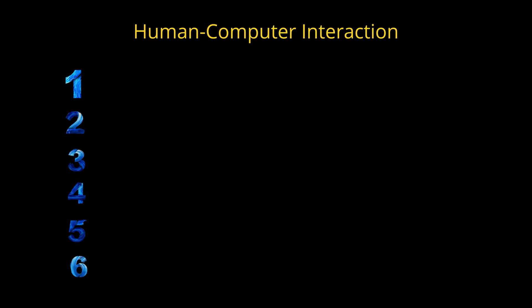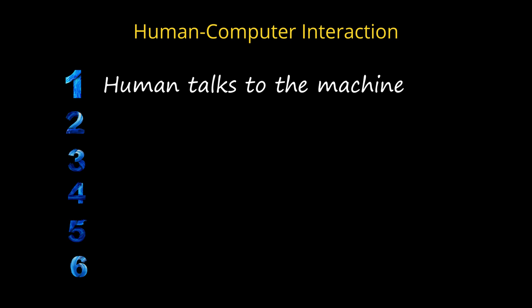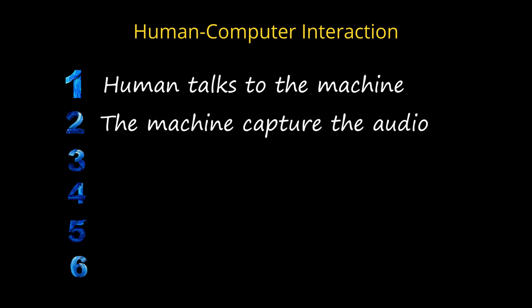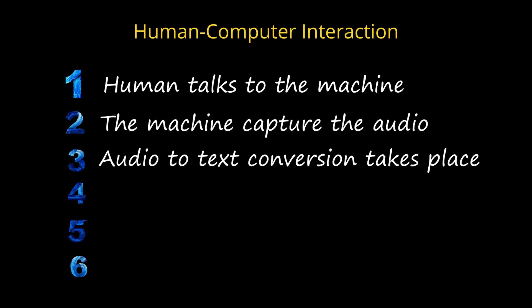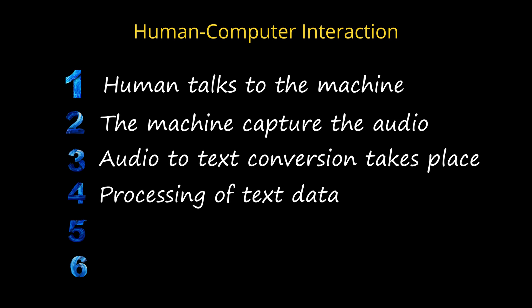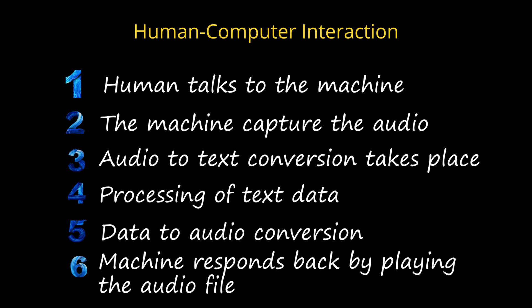A typical interaction between a computer and a human would be as follows: the human talks to the machine, the machine captures the audio, audio-to-text conversion takes place, followed by processing of text data, then data-to-audio conversion, and finally the machine responds back to the human by playing the audio file.